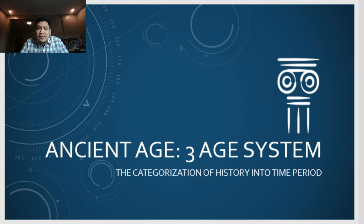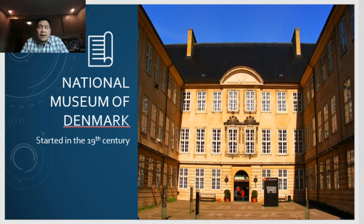Science and technology in the world starts off with the ancient age or the three-age system. It is considered as a categorization of history into different time periods — how a simple caveman developed, adopted, or even evolved physically, mentally, and socially in order to survive. This system was formulated during the 19th century in the National Museum of Denmark.